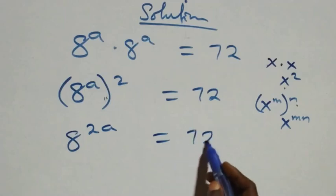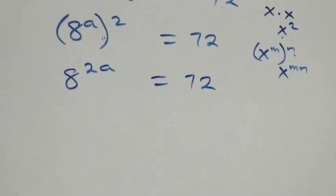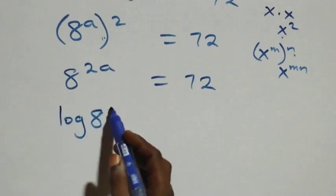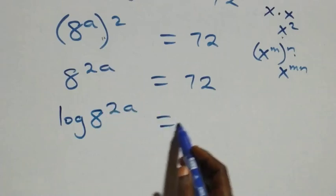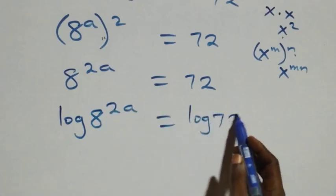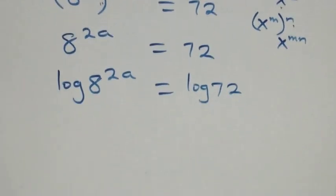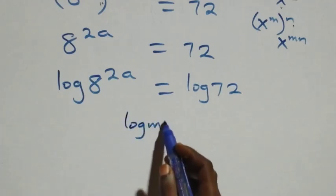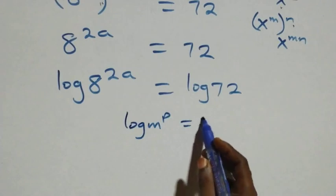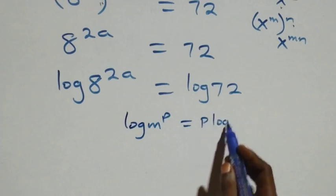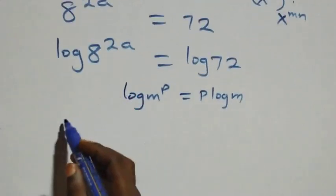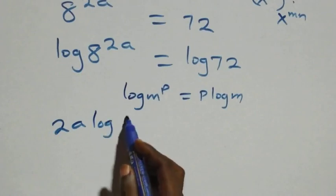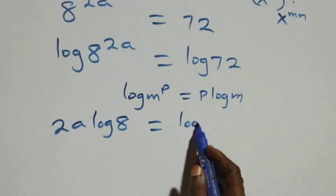In the next step we apply the log on both sides, so we have log of 8 raised to power 2a equals log 72. We apply the power rule of log: when we have log m raised to power p, this is the same as p log m. So the power 2a comes down and we have 2a log 8 equals log 72.